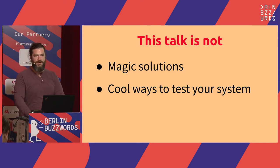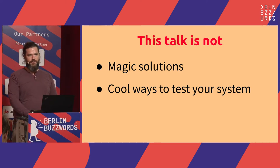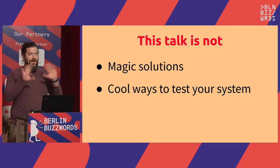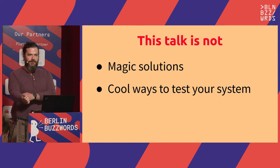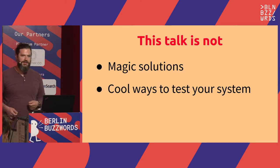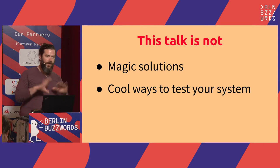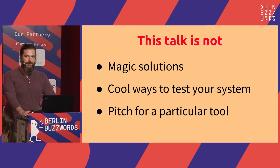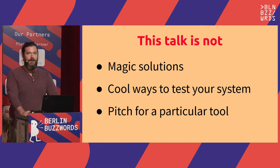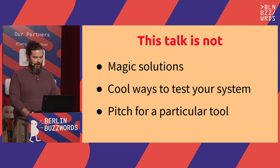We're also not talking about cool ways to test your system. I've heard talks about things like Jepsen or other fuzz testing or fun testing tools — things that will unplug network interfaces to verify the guarantees your system tries to make about consistency. We're not doing that. This is more practical and grounded. This is not a pitch for a particular tool. If you use Jenkins, GitLab, CircleCI — I have my opinions, but I'm not going to tell you that one solution solves all your problems.